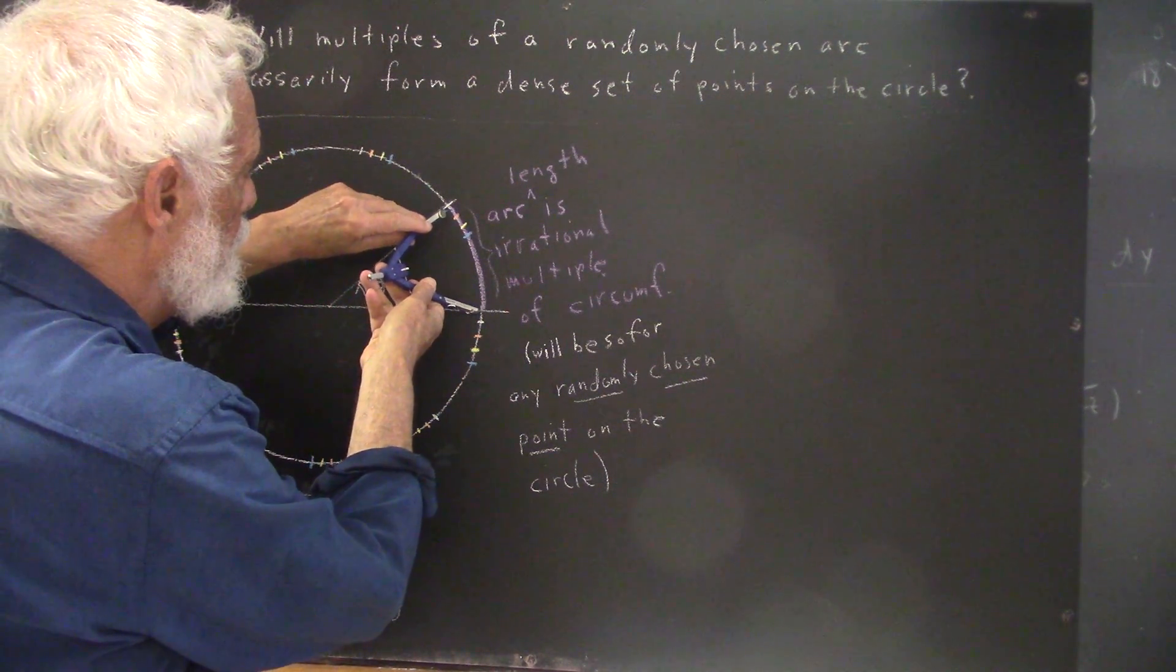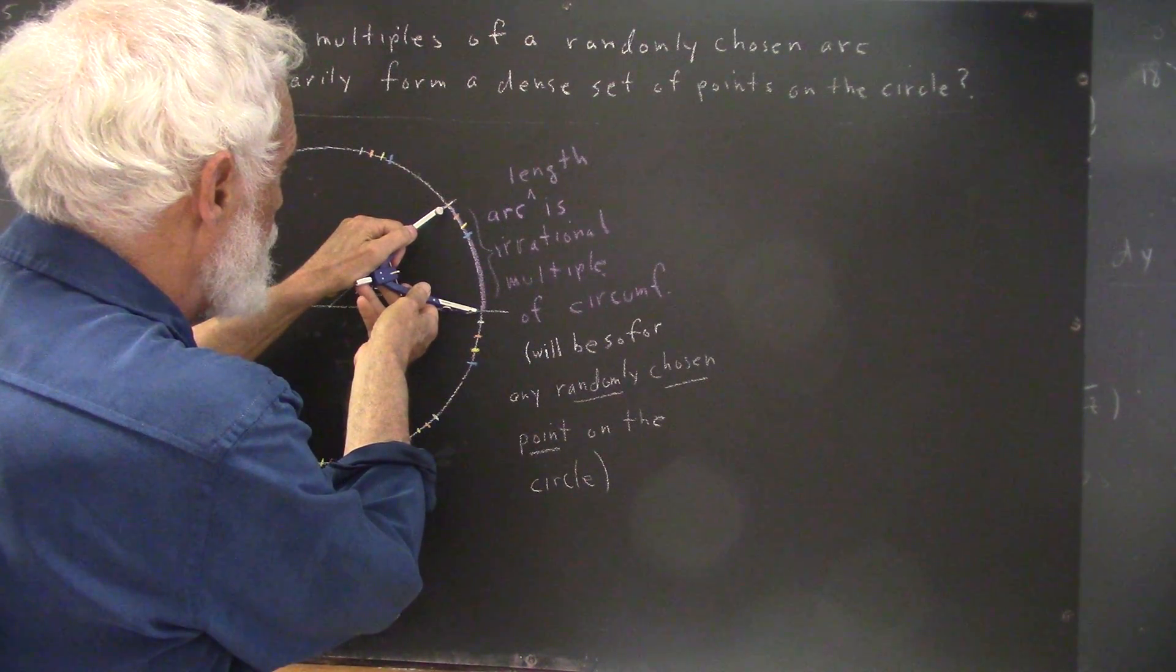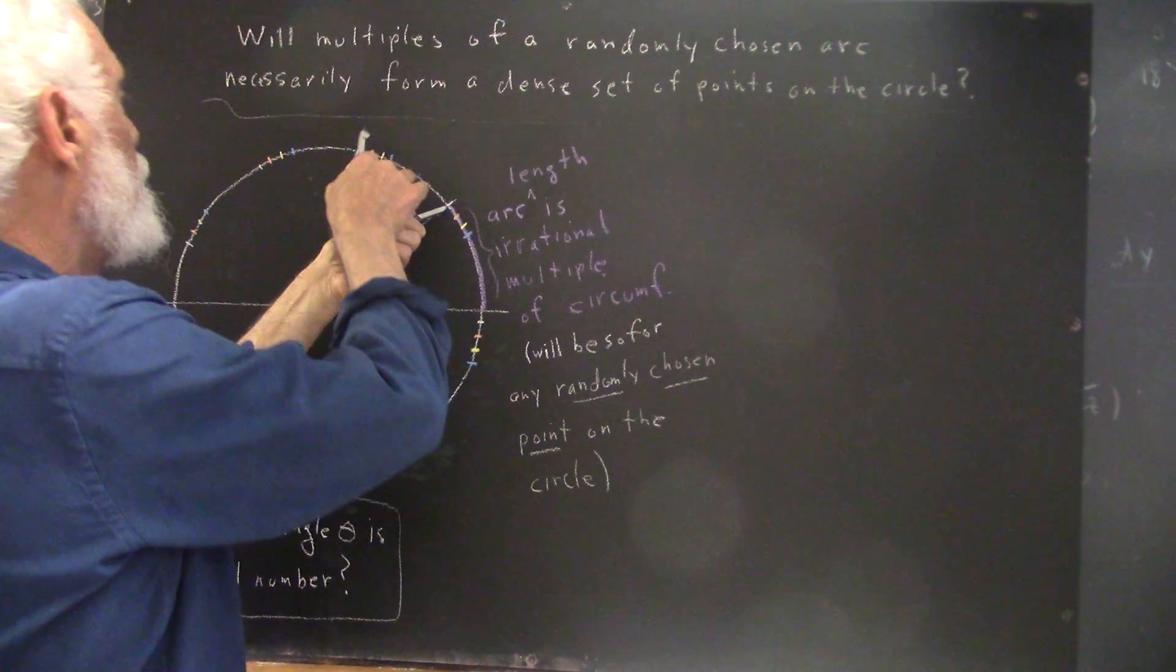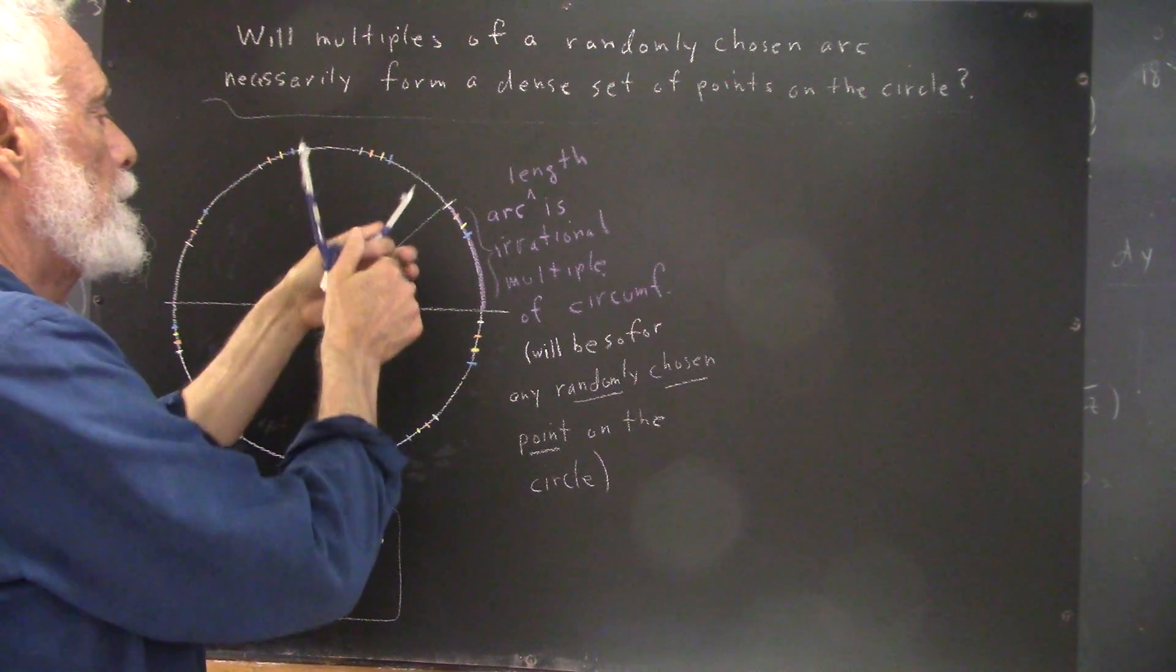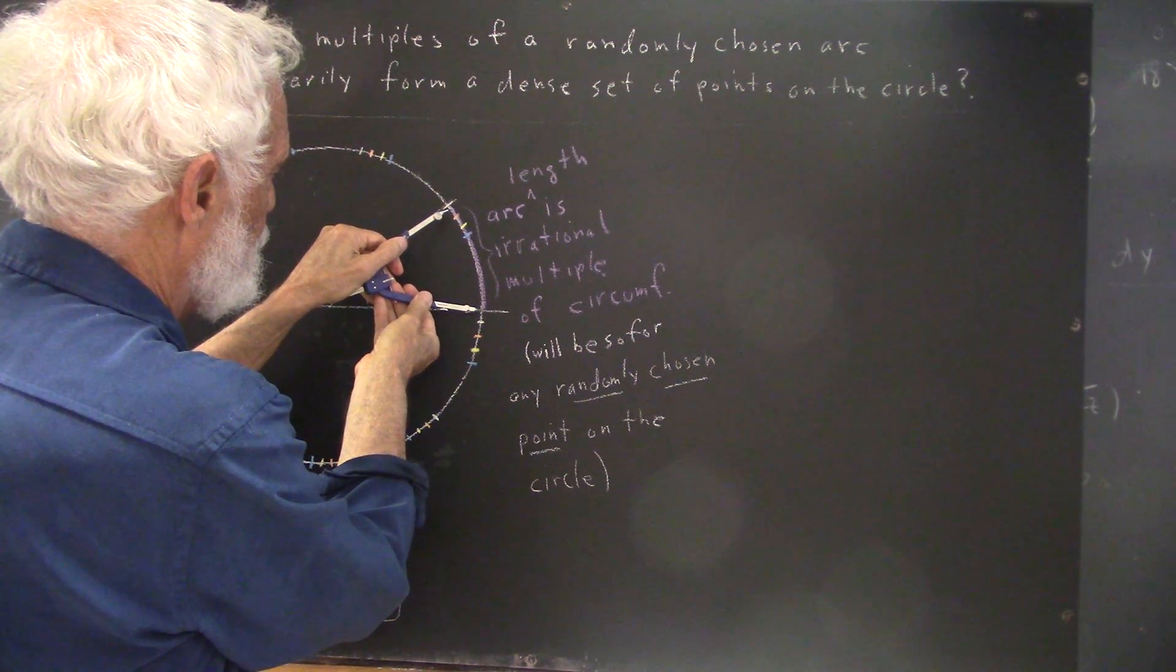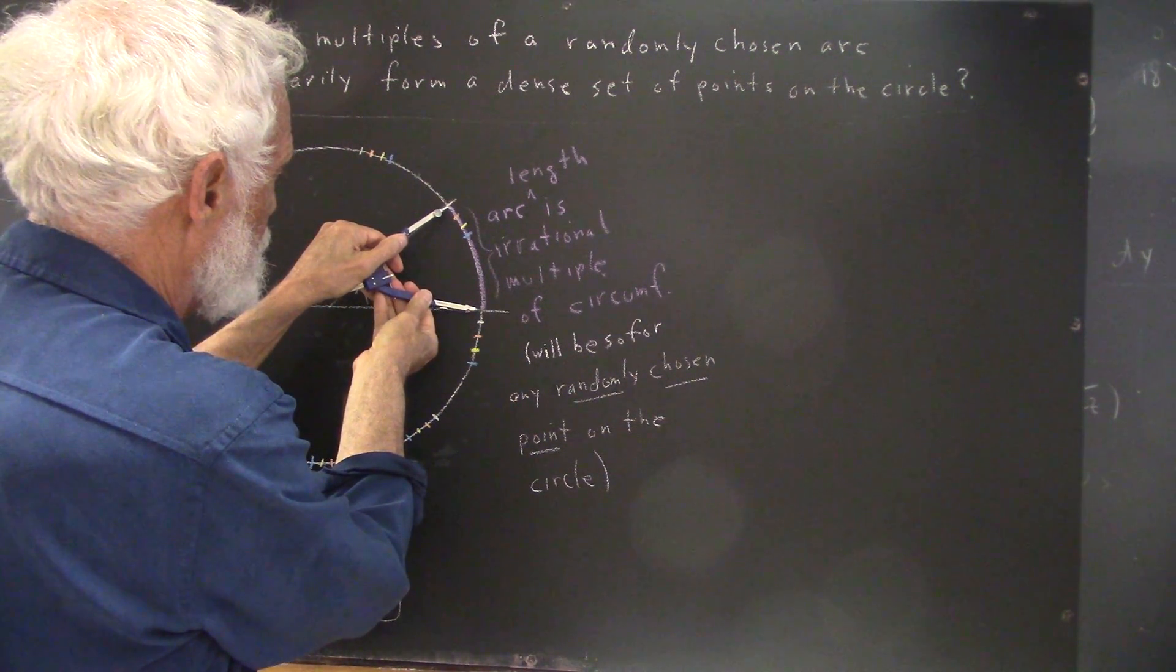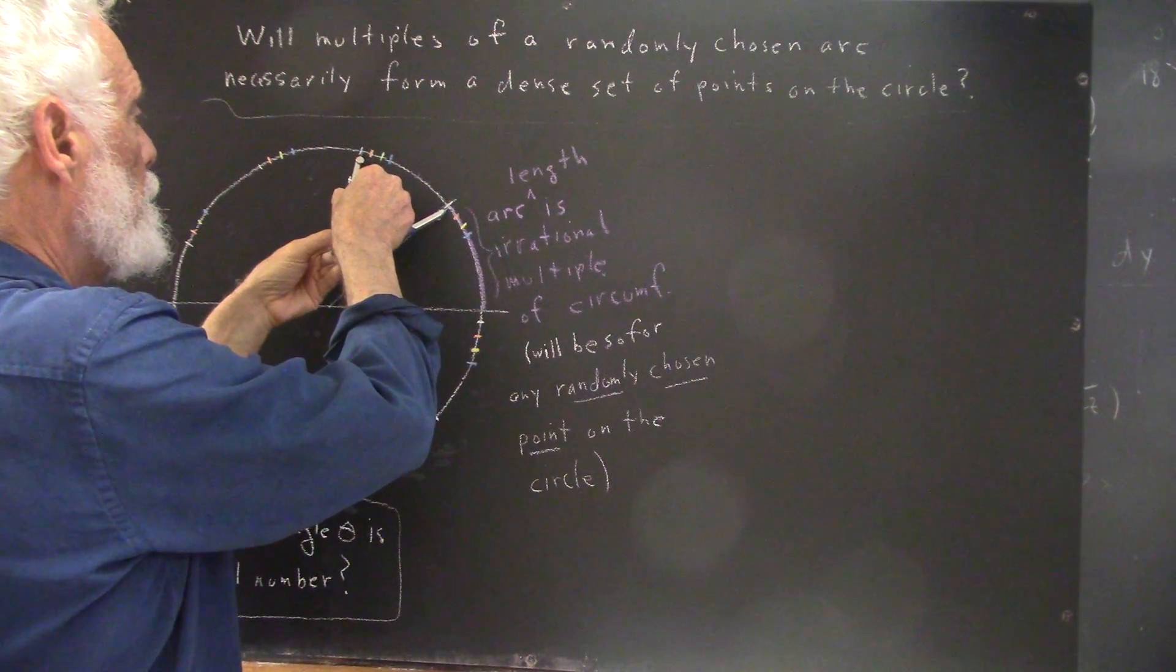Now, what I want to do is I want to take multiples of this arc. So, I'm going to spread my compass out to the length of this arc, and I'm going to move along the circle, and I'm fudging a little bit because actually I'm going to set the compass just a little differently. And it doesn't really match this arc anymore, but we'll pretend that it does.